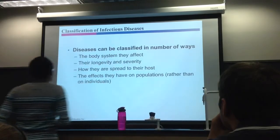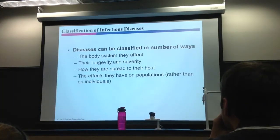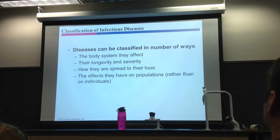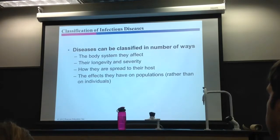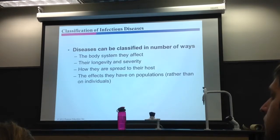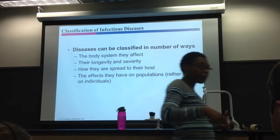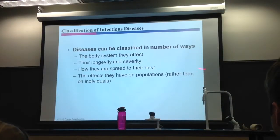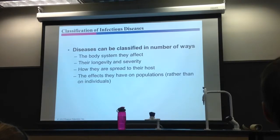How do you classify diseases? You can classify diseases in multiple ways. First, by body systems — we'll get into that at the end of the semester: respiratory tract, genital tract, reproductive tract. How about their longevity or severity? That covers things like acute versus chronic diseases, which we'll talk about next.